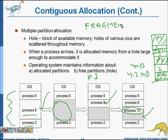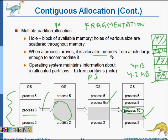In fragmentation, even though you have enough space in memory, it is not contiguous, so you cannot allocate it to a process. This is external fragmentation and it is a big problem. When a process arrives it is allocated memory from a hole large enough, but here there is no hole that is large enough.